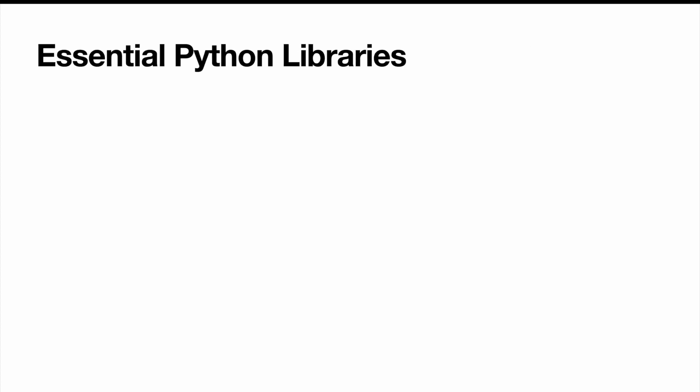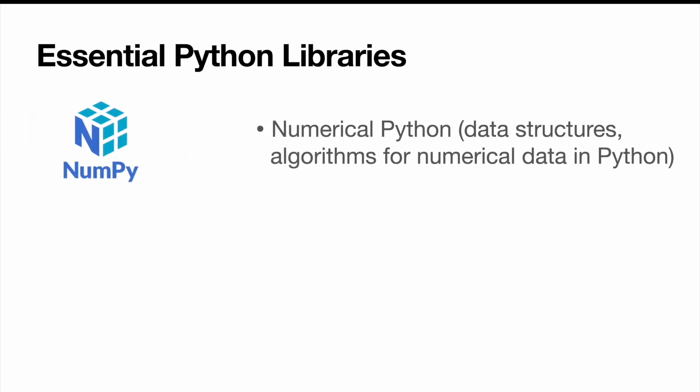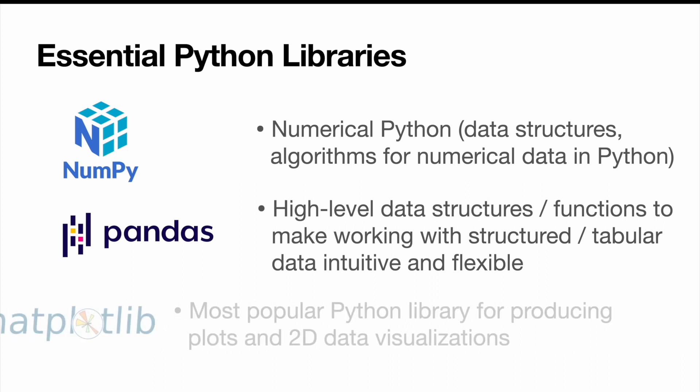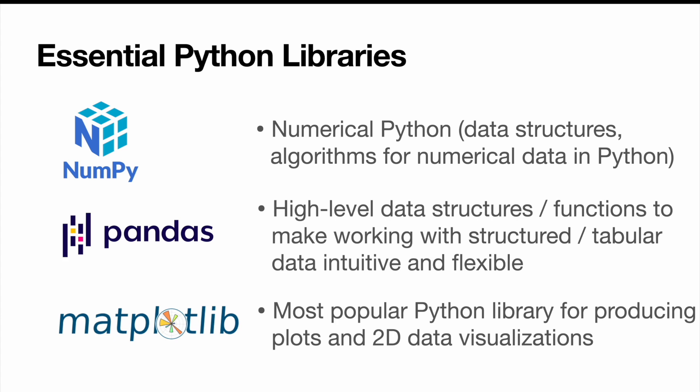So let's get an overview of some of the essential Python libraries that we are going to work with going forward. The first one is NumPy, which is short for Numerical Python — a library used for data structures and algorithms to accomplish all kinds of numerical data work in Python. We're also going to work with pandas, which is a library that provides high level data structures as well as functions to make working with structured and tabular data intuitive and flexible. We of course also want to be able to visualize our data, and for that we are going to use Matplotlib, which is the most popular Python library for producing plots and two-dimensional data visualizations.